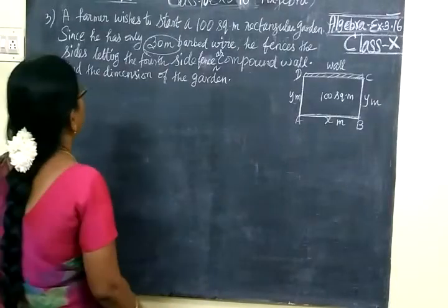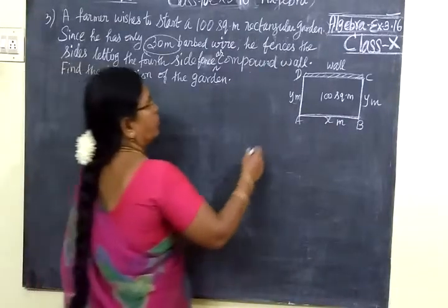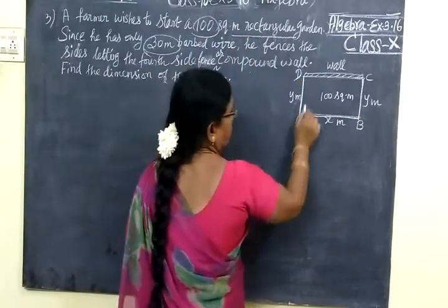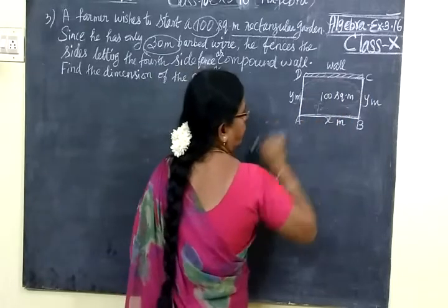Good evening students. Here a farmer wishes to start a 100 square meter rectangular garden. This is a rectangular garden. Its area is 100 square meters.